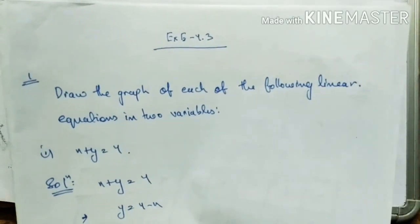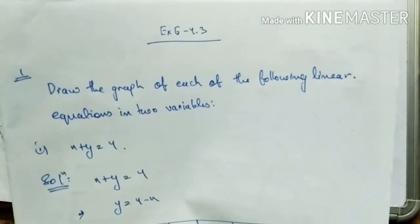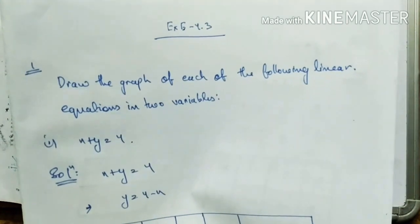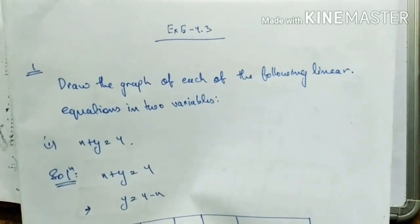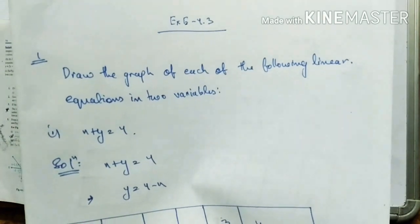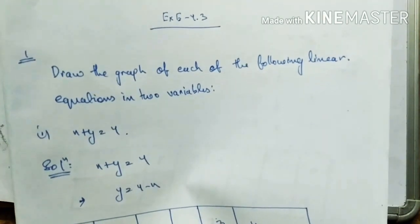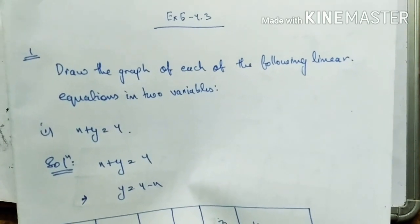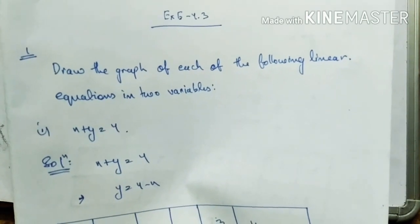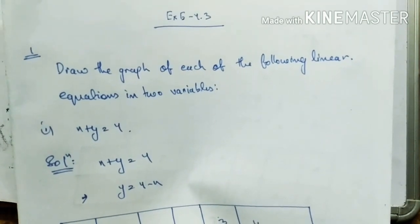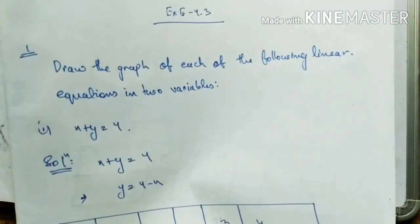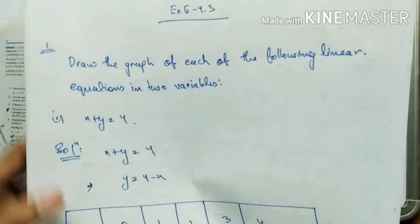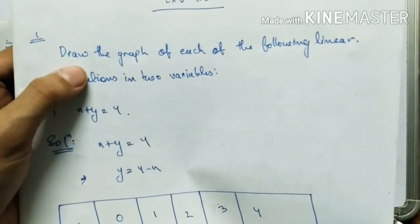Hello students of Class 9, this is General Mathematics Exercise 4.3. These notes have already been given to you. I hope you have written them in your maths copy. This is Exercise 4.3, Question Number 1: draw the graph of each of the following linear equations in two variables.